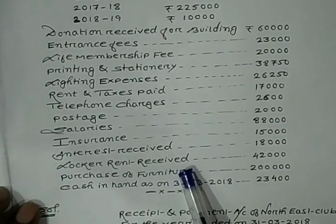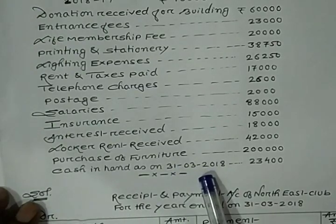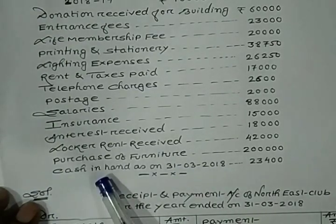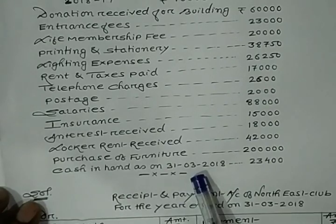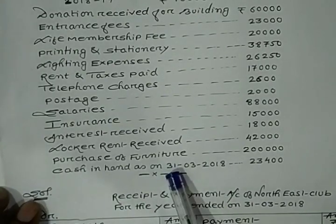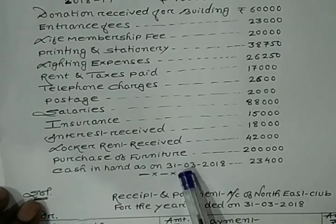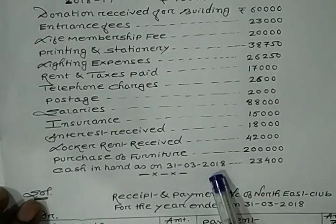Purchase of furniture is capital payment, so it also has to be recorded on the credit side of Receipt and Payment Account. At the end of the year — 31st March 2018 — the closing cash balance you have must be recorded on the credit side. Opening cash balance and opening bank balance are recorded on the debit side, while closing cash and bank balance are recorded on the credit side. The closing cash given is Rupees 23,400 because it is the year-ending balance on 31st March.